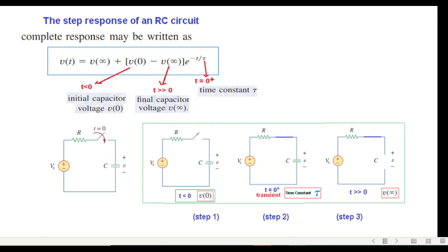If this is the circuit at t less than 0, the switch is open and whatever voltage is across the capacitor will be called v(0). This will be our step number one in solving the problems.